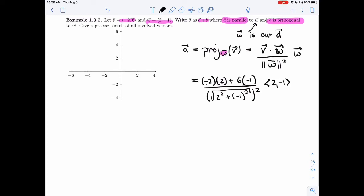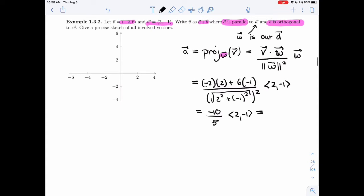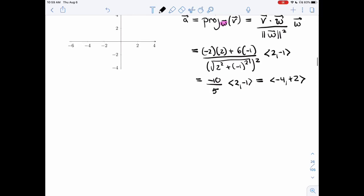So I get -4 - 6, I get -10. Here I get √(4 + 1), so √5 squared equals 5. The square root and the square will always cancel here, so that's going to be nice. I'm not going to end up with a square root. And then so that's -2, so I get -4 plus 2. So that's our A.